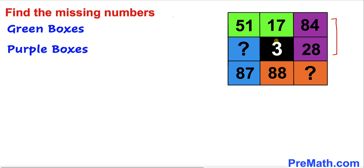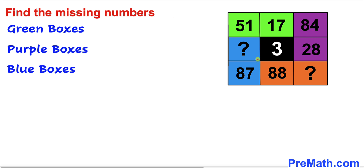Let's go ahead and multiply this 3 with the adjacent number, which is 28. If we multiply, we are going to get 184. Now let's focus on these blue boxes.